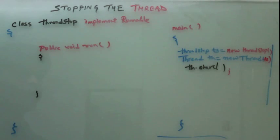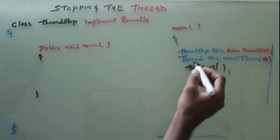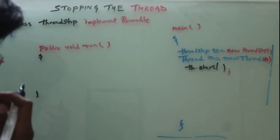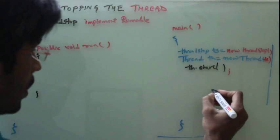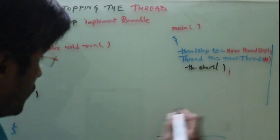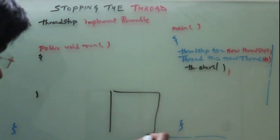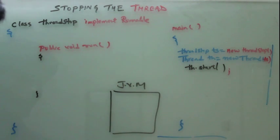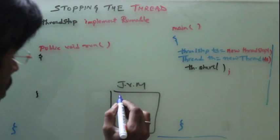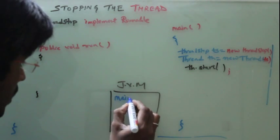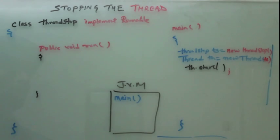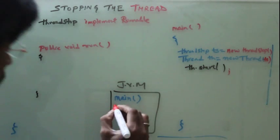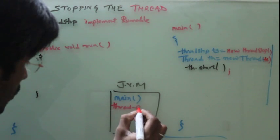So what will happen now? When we run this program, then in JVM, let's say this is my JVM. Our main thread will be created and it will create another thread, Thread zero.